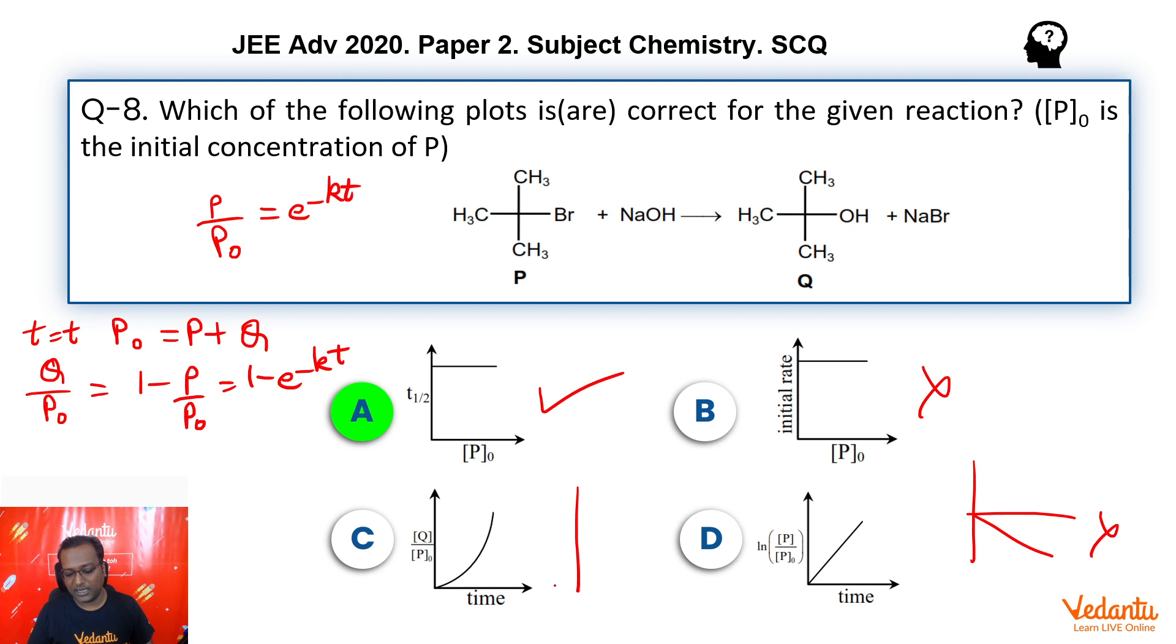That means, this graph should have been something like this. Approaching 1. Isn't it guys? At T equal to infinity, you will have all reactant converted to product. So, Q by P naught should become 1 at infinity. So, this also does not match.